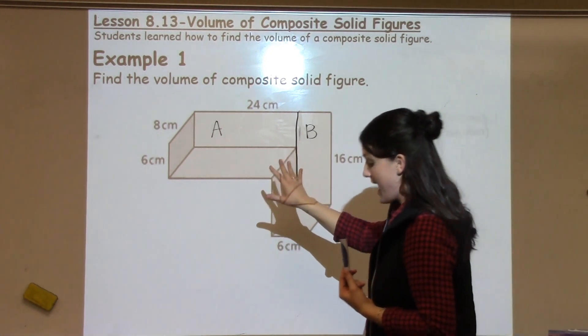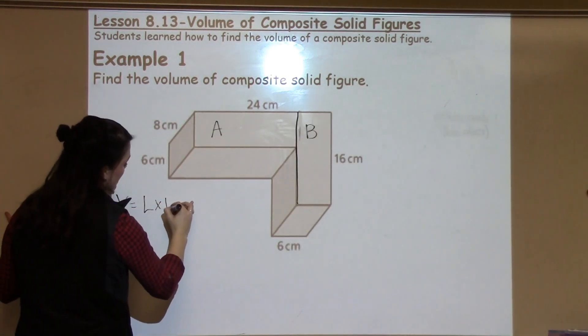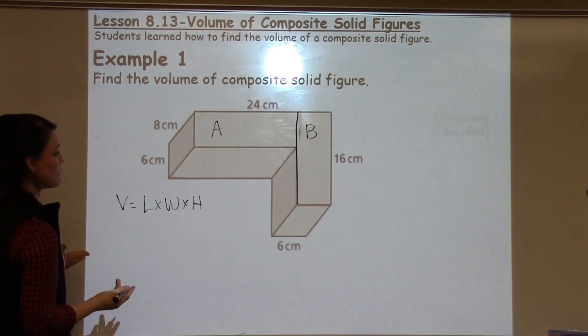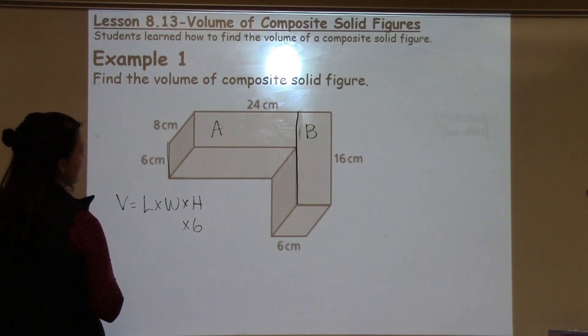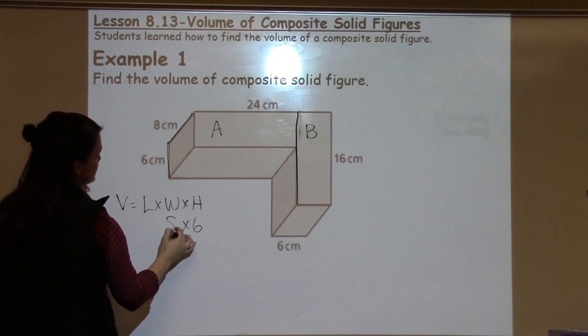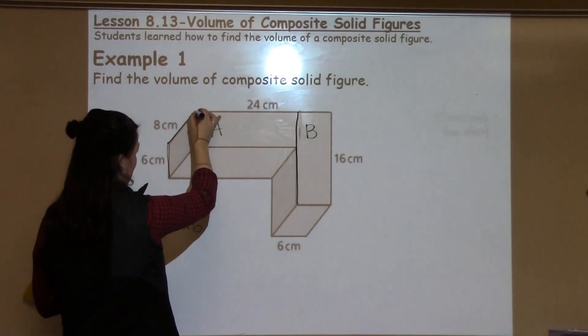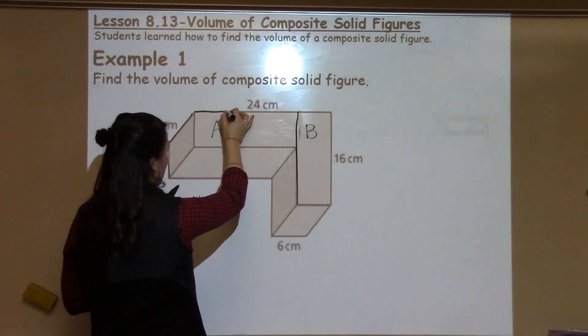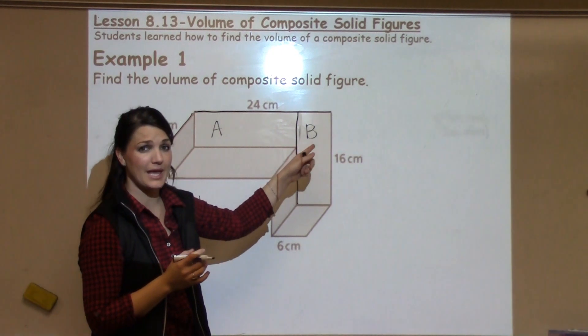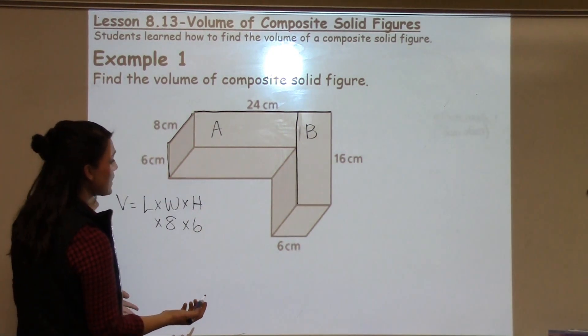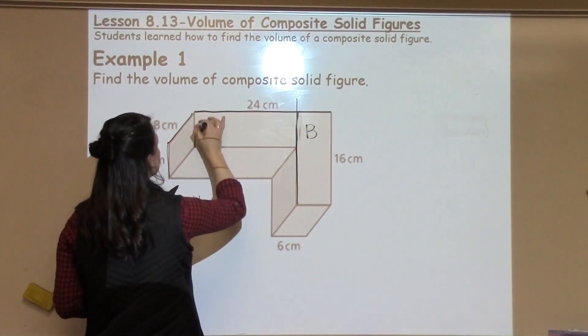I'm first going to start with shape A. I know that volume is length times width times height. When I'm looking at shape A, I have the height, which is six, so I'm going to put that in. I have the width, which is eight. Then I don't quite have the length because what I do have, which is the 24, is the length of this whole long shape. But part of that shape is part B.